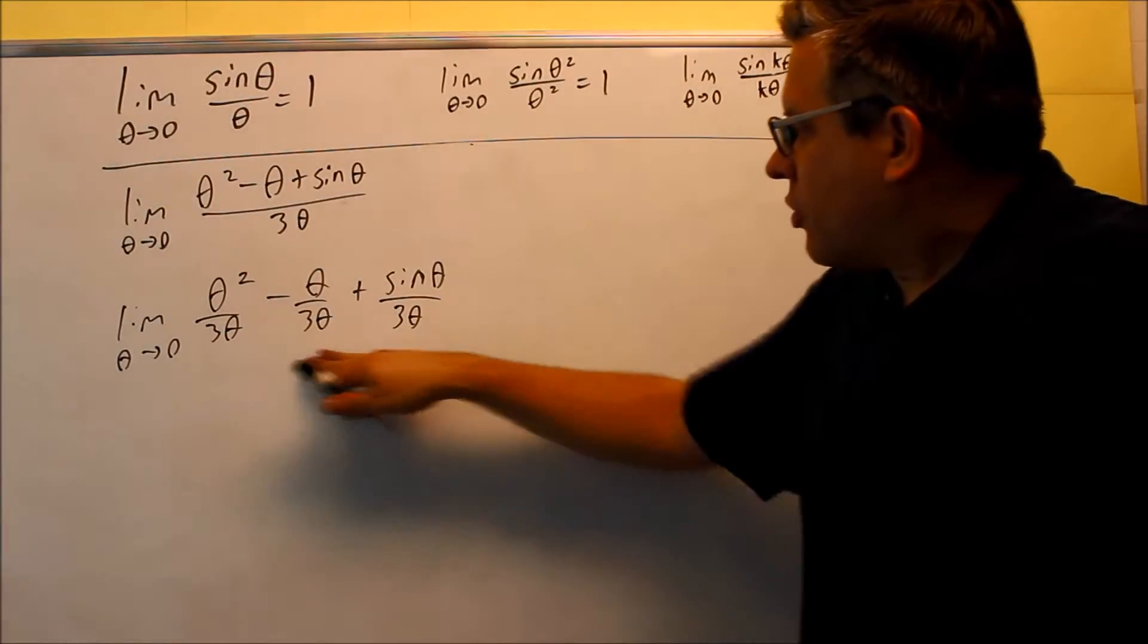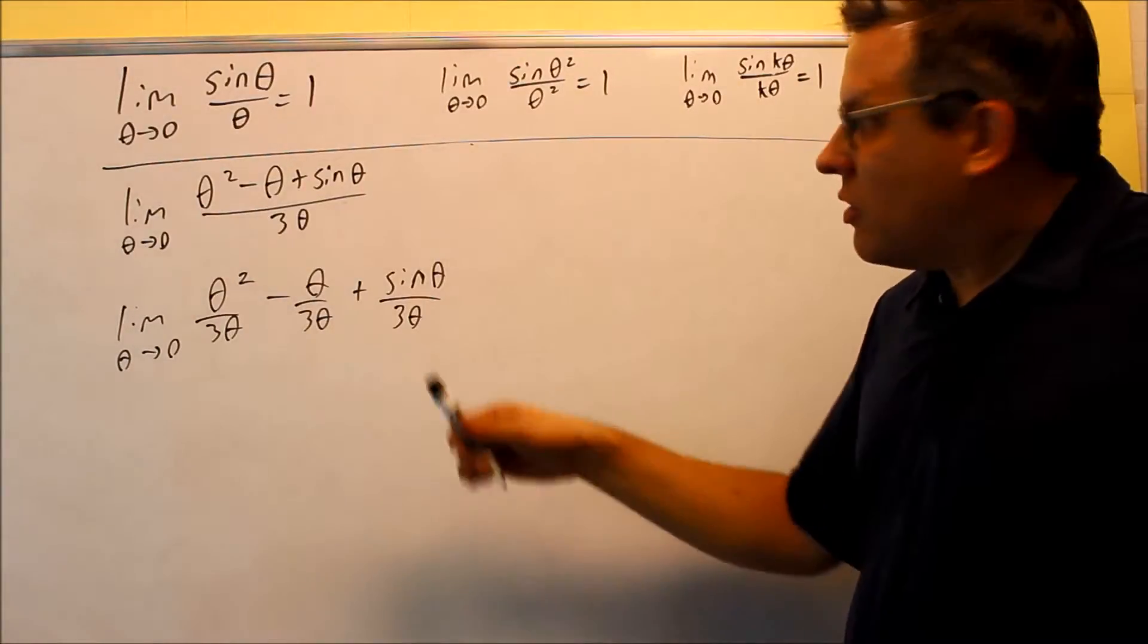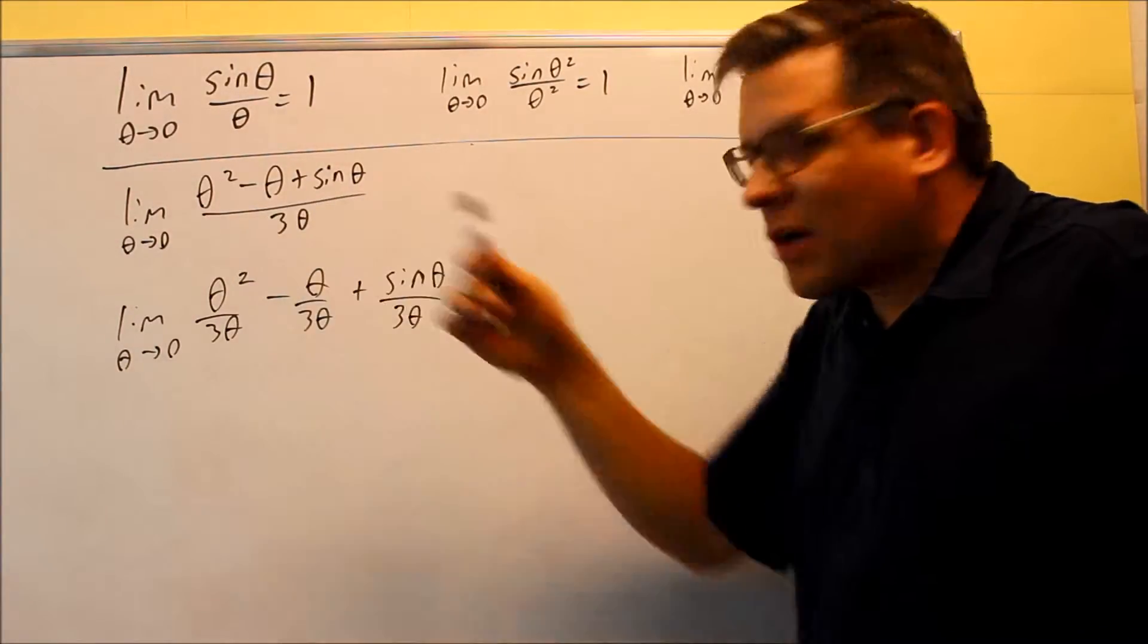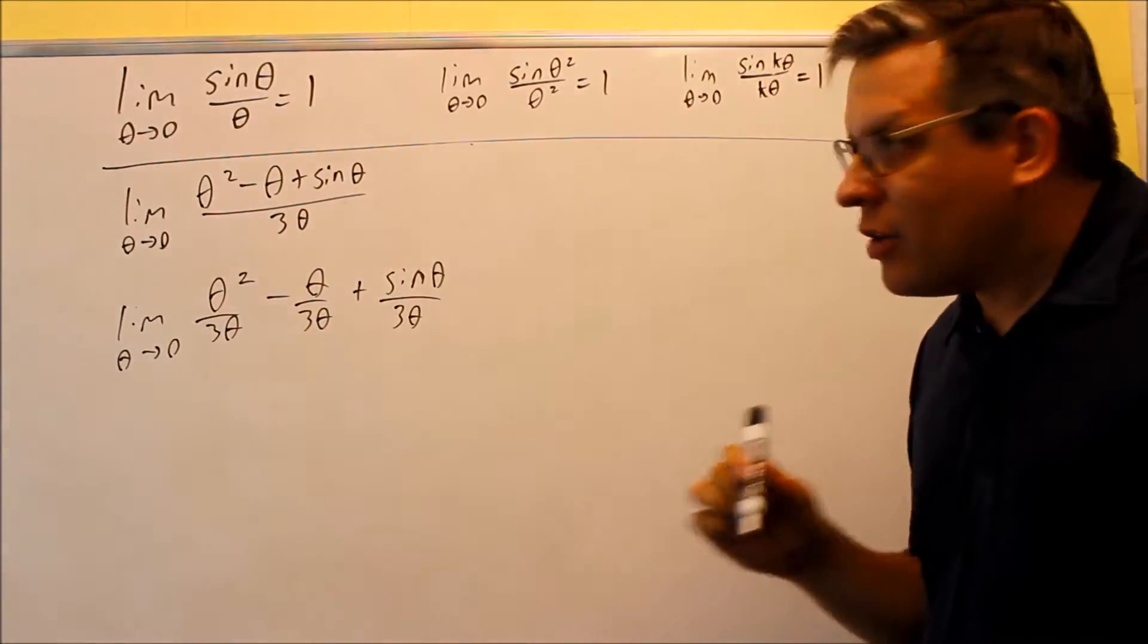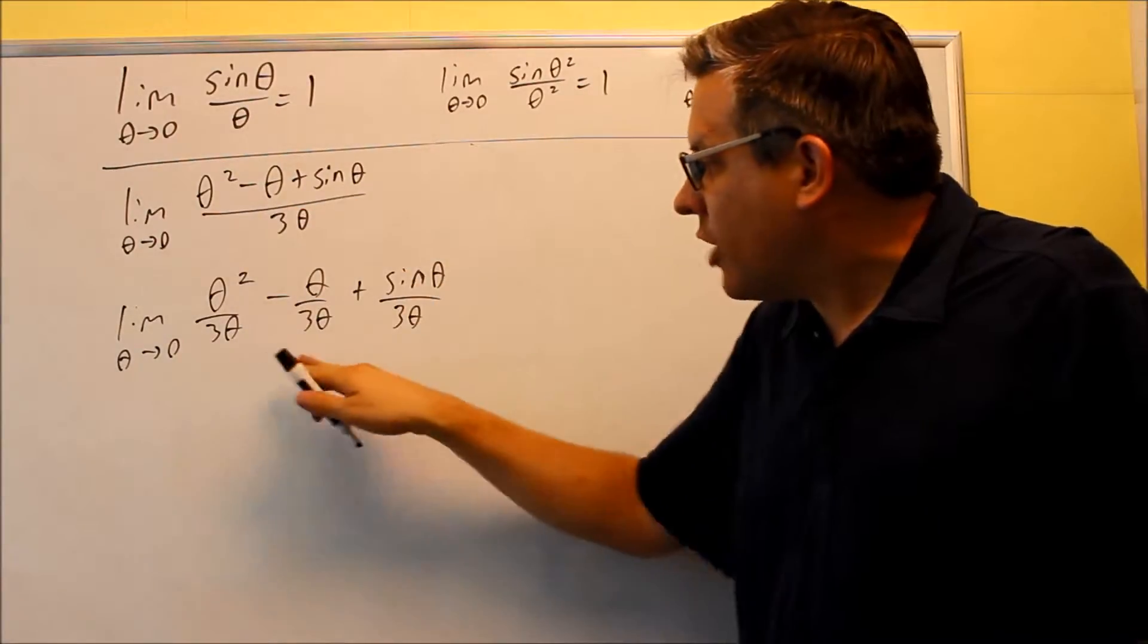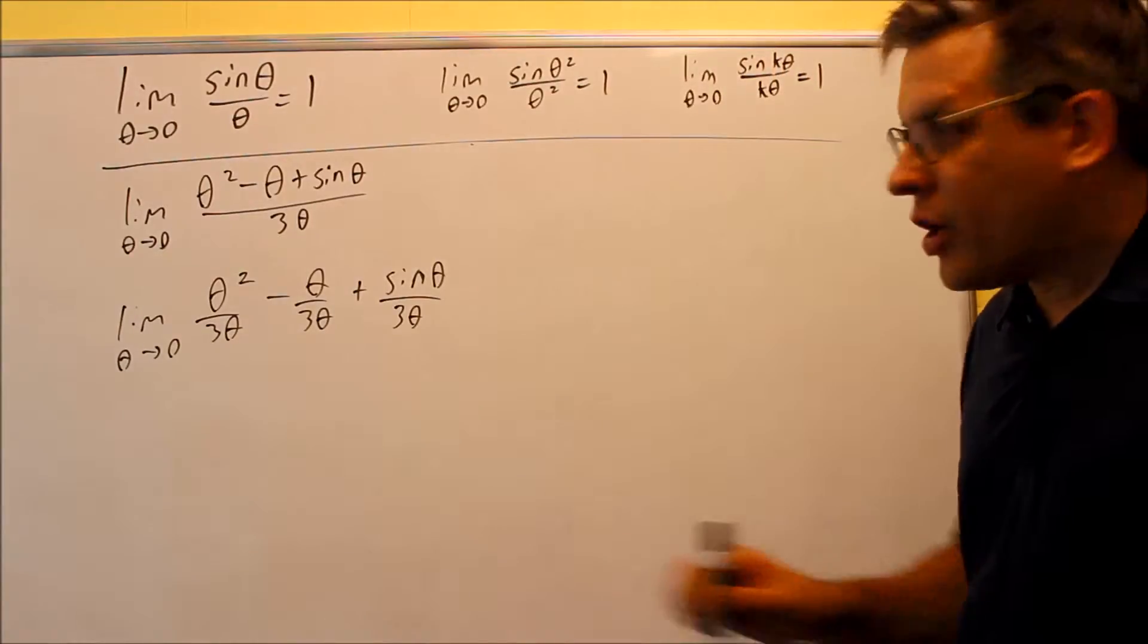So breaking it up into three different fractions, you're allowed to do that as long as there's no plus or minus happening in the bottom. If there's a plus or minus, you can't do it, but in this case, you're taking three multiplied by theta. That's considered one term, so that's why you're able to break it up that way.